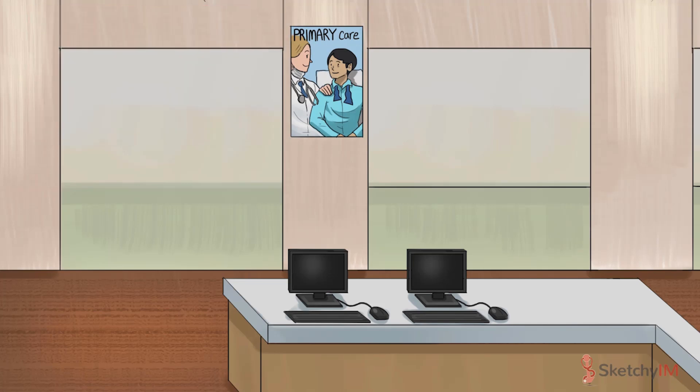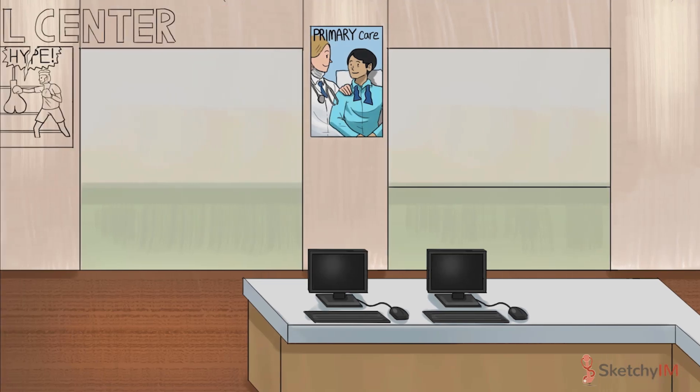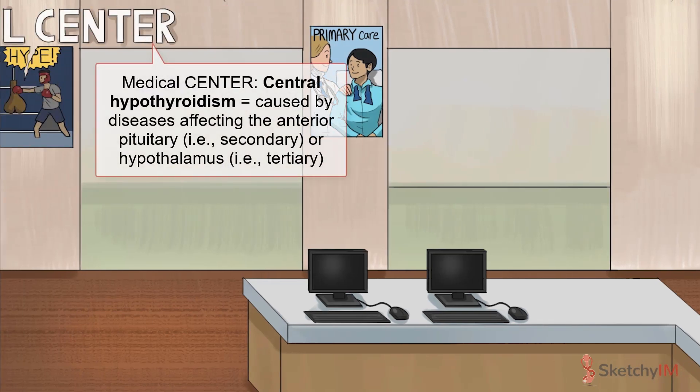Hypothyroidism caused by a disease higher up on the HPT axis is known as central hypothyroidism. Central hypothyroidism can be caused by diseases affecting the anterior pituitary, aka secondary hypothyroidism, or the hypothalamus, aka tertiary hypothyroidism.